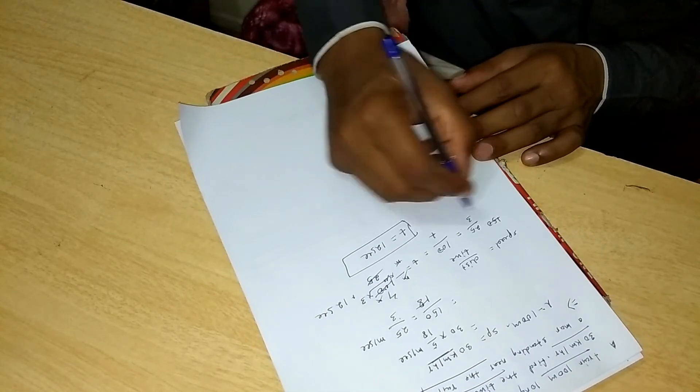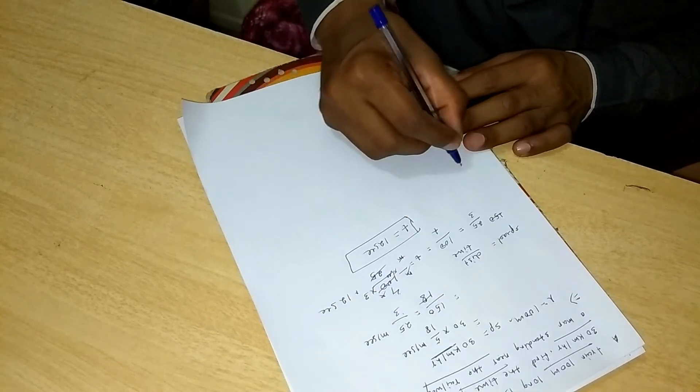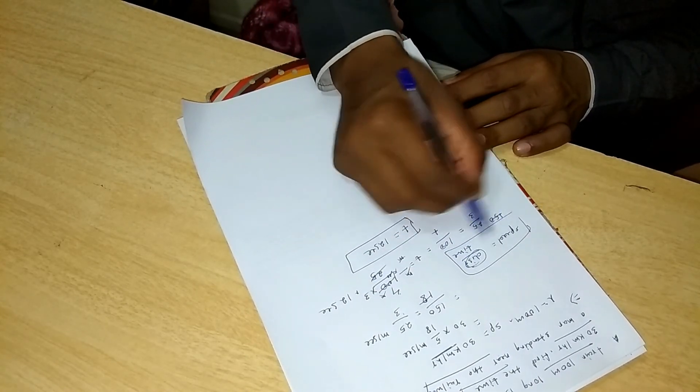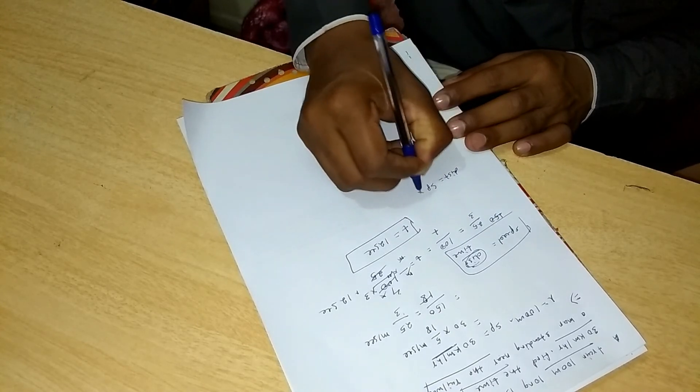If you need to calculate distance only, you need to rearrange the formula. Distance is equal to speed into time.